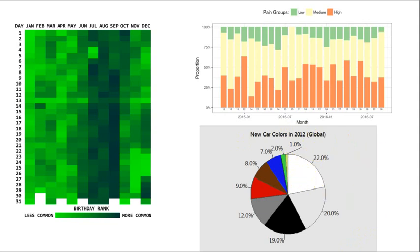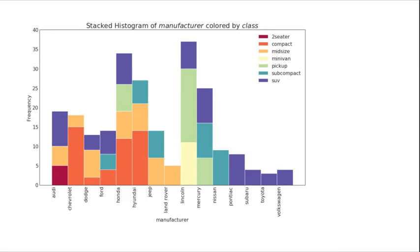Here's a challenge evaluation. What we're looking at here—I do want you to take a minute to read it—is a stacked histogram. Car manufacturer is on the horizontal x-axis, like Audi, Chevrolet, Dodge, Ford, and frequency is on the vertical or y-axis. What we're looking at the frequency of is the type of vehicle manufactured by each manufacturer.